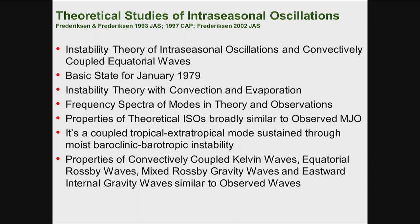There's a question of why not use a multi-year average. He said it's better to use one single month because if you use a multi-year average, you smooth out features that are critical for this instability. The theory is an instability theory — you need to include convection and evaporation in the model. They analyze the frequency and wavenumber modes generated from an eigenvalue-eigenvector analysis.